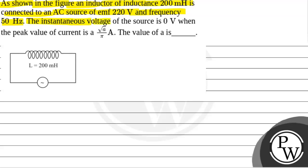The instantaneous voltage of the source is 0V when the peak value of the current is √A/π ampere. The value of A is what we need to find, so we will solve this question.